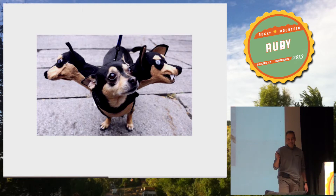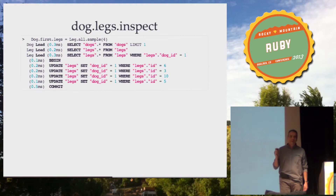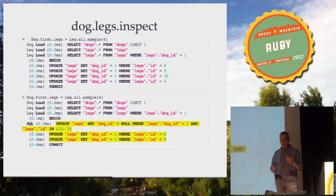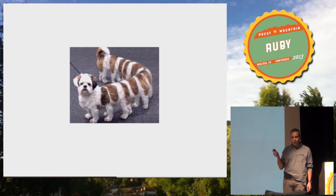Rails' assumption that this statement will return the previous head is kind of optimistic. The situation with legs is a little better because Rails doesn't make assumptions about how many legs were there before, and it doesn't attach anything before detaching — it's done in the proper order. But we still have the same common problem of SELECT before UPDATE that can interleave with different processes.